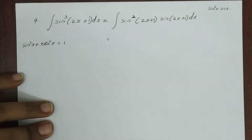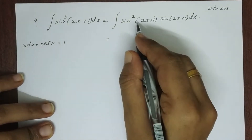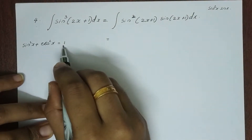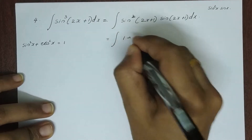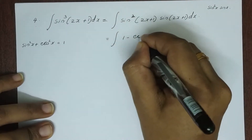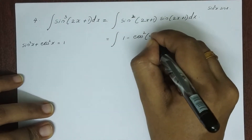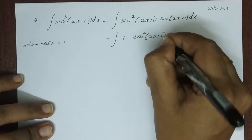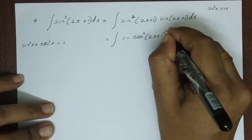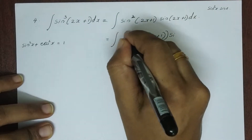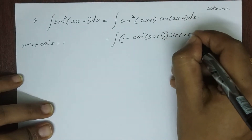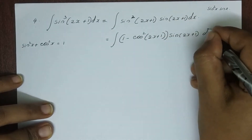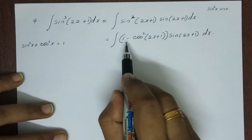We substitute sin²x + cos²x = 1, so sin²(2x+1) becomes 1 minus cos²(2x+1). This gives us 1 minus cos²(2x+1), into sin(2x+1) dx.